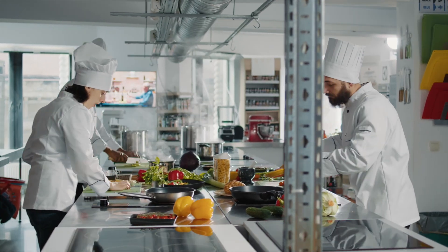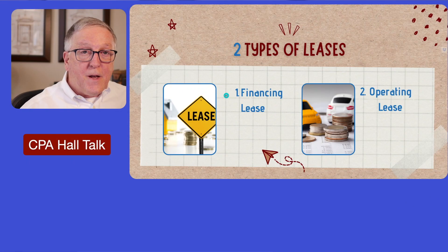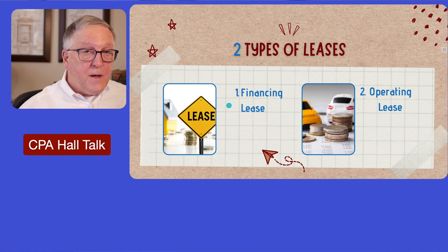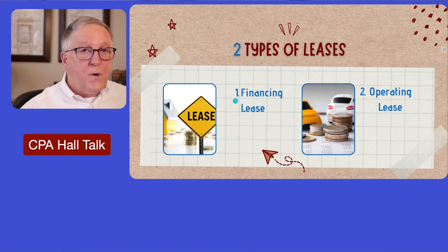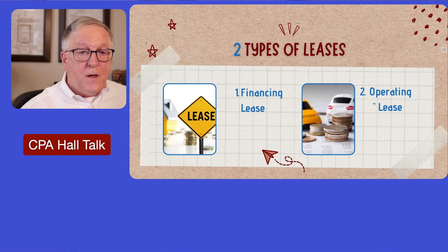In this video I'll explain the different types of leases under ASC 842 — financing and operating — and then give you the secret recipe for the journal entries. Historically under ASC 840, we had capital leases. Going forward under ASC 842, we'll now call those financing leases, and we've had operating leases in the past and will continue to use that same name.